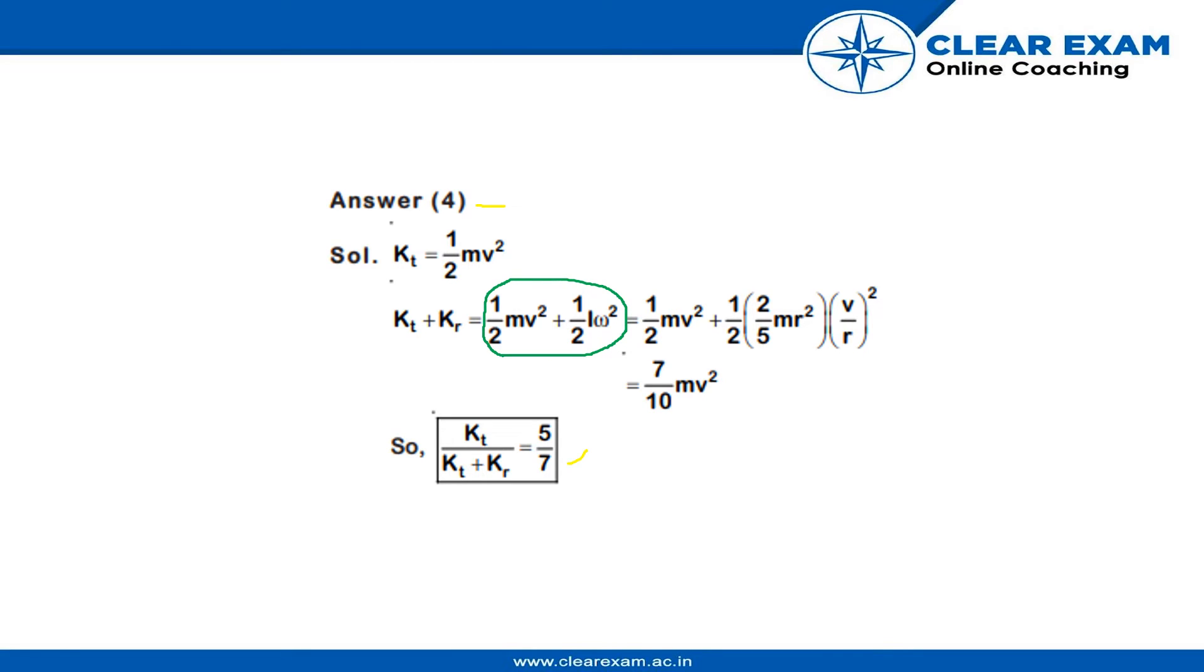So, here putting upon the values of I and omega. I for solid sphere is we all know that I for solid sphere is 2 upon 5 MR squared.